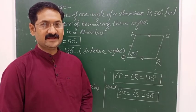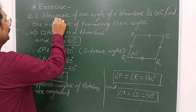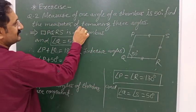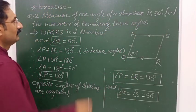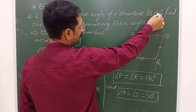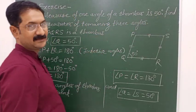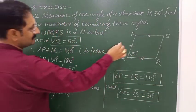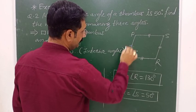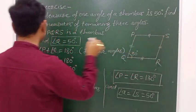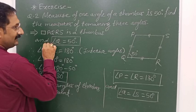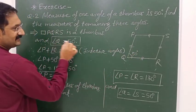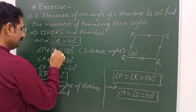Exercise question 2: The measure of one angle of a rhombus is 50 degrees. Find the measures of the remaining 3 angles. In rhombus PQRS, angle Q is equal to 50 degrees.